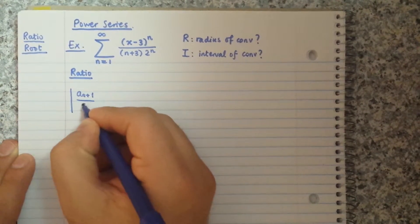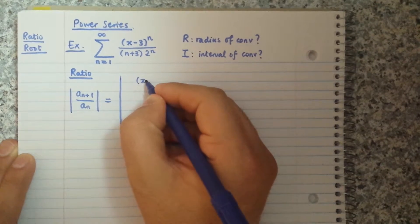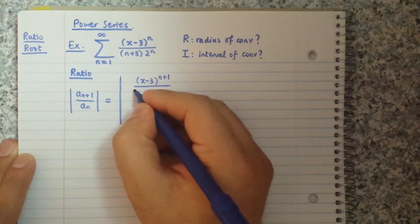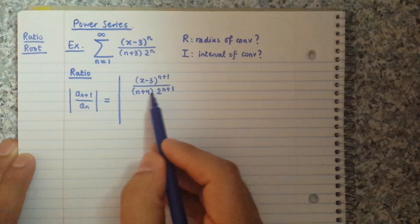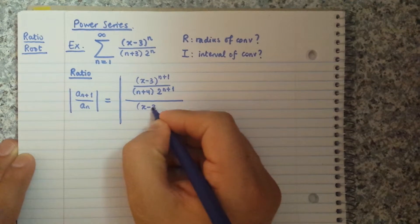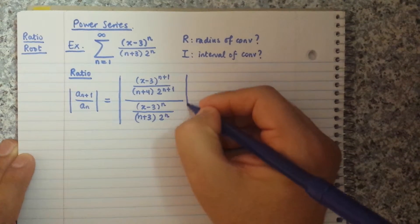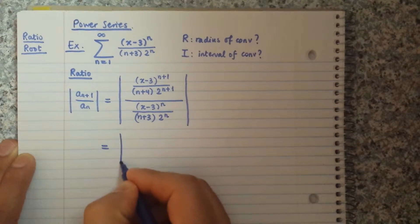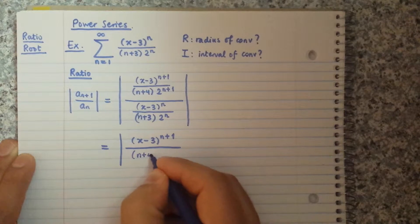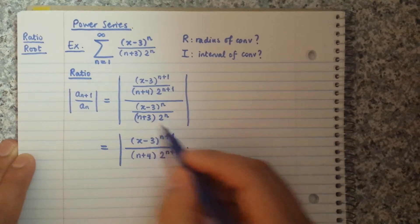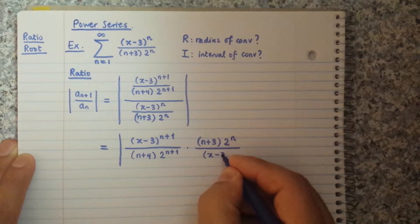We look at a_{n+1} over a_n. Writing a_{n+1}, that will be (x minus 3) to the power n+1, divided by (n plus 4) times 2 to the power n+1 — note n+4 because we replace n by n+1. At the bottom we have (x minus 3)^n divided by (n plus 3) times 2^n. We flip and multiply: (x minus 3)^{n+1} over [(n+4)·2^{n+1}] times (n+3)·2^n over (x minus 3)^n.